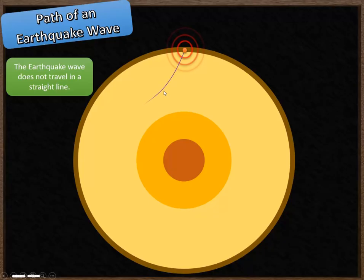So here's our wave initially travelling straight, but as it gets deeper into the mantle, it starts to curve and bend away from the core. We're going to think about why that's the case.